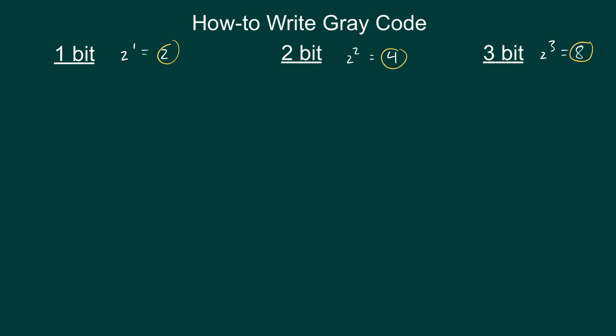Now let's start off with the 1-bit. So 1-bit can either be zero or one and 1-bit is complete. This is the Gray code for 1-bit and it's actually the same as the binary.